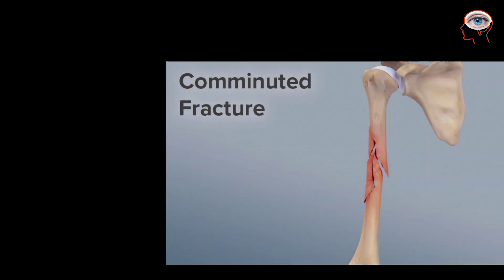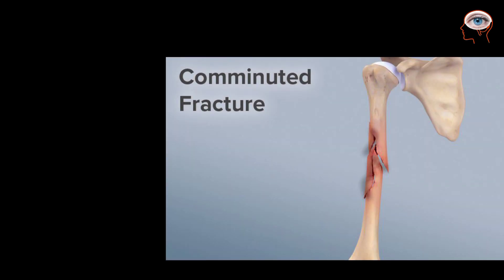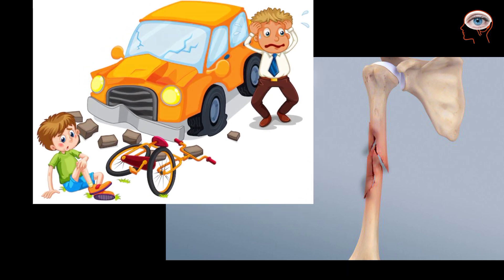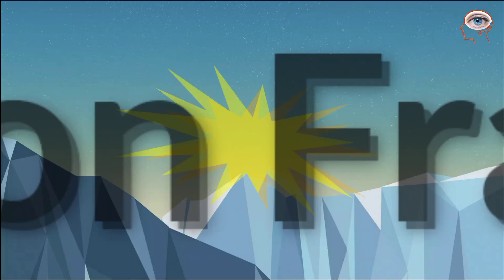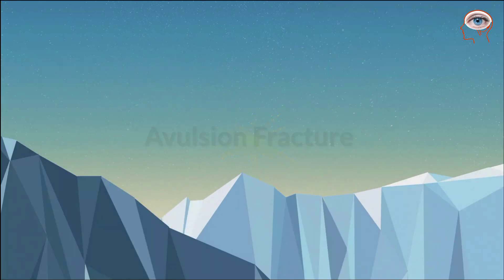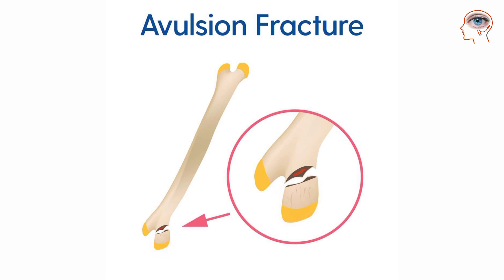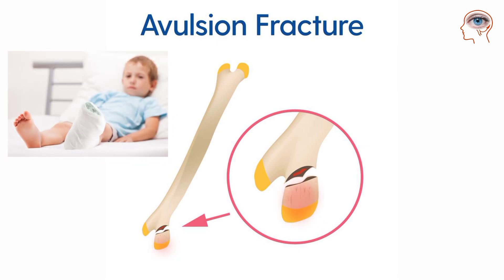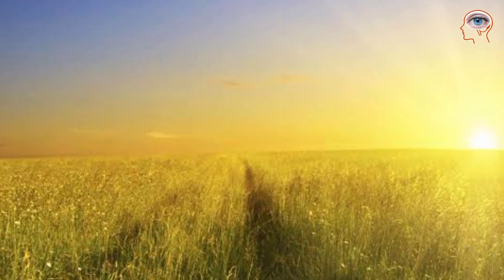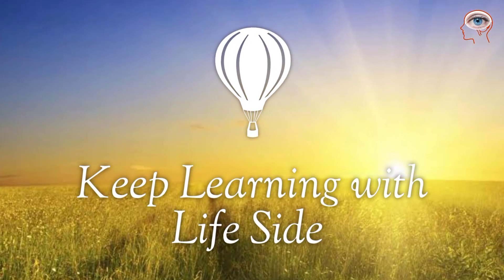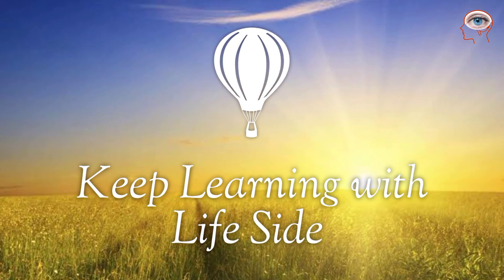Comminuted fracture: in this fracture, the bone is broken into three or more pieces. It happens due to high-impact trauma such as automobile accidents. Avulsion fracture: in this fracture, a fragment is pulled off the bone by a tendon or ligament. This fracture is also more common in children.